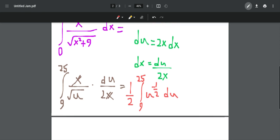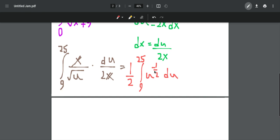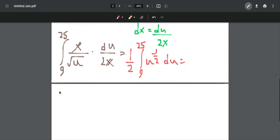Now the whole integral is in terms of u, and thus we can use the power rule of the integral. We add 1 to the power, so we get negative 1 over 2 plus 1, which is 1 over 2, and then we divide it.